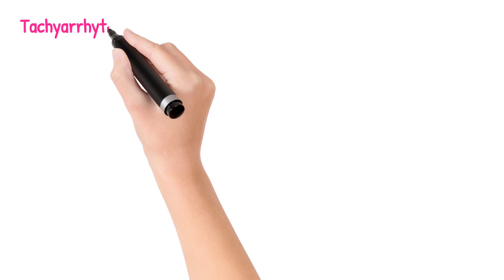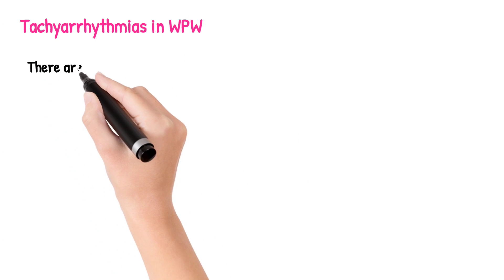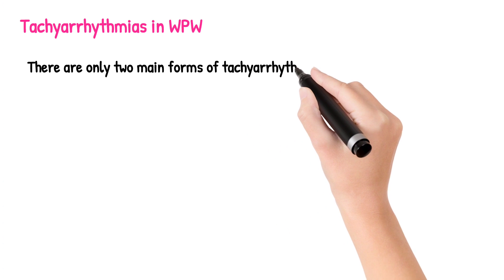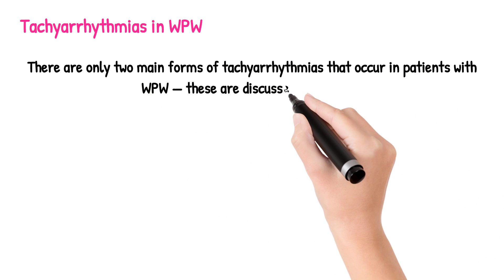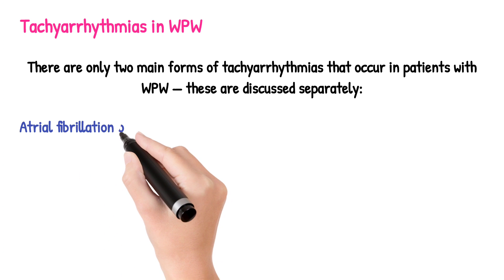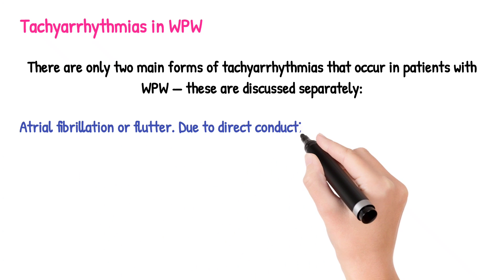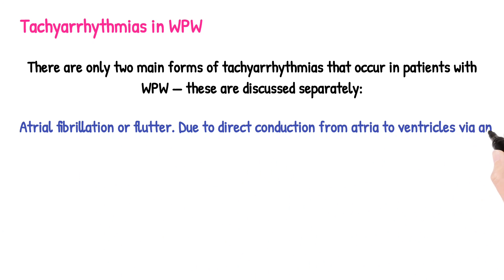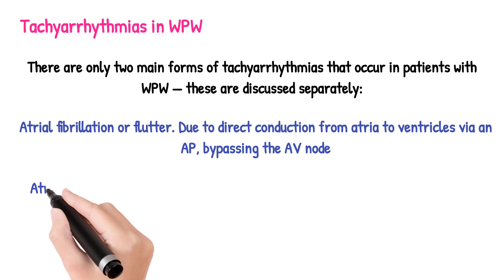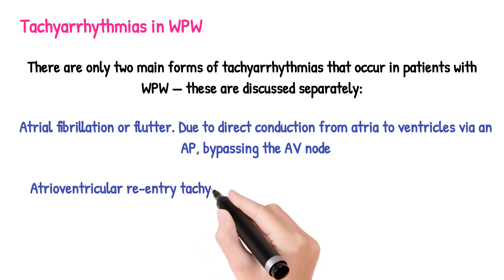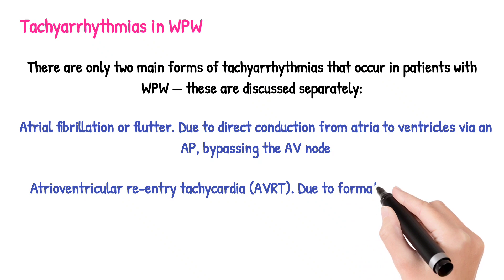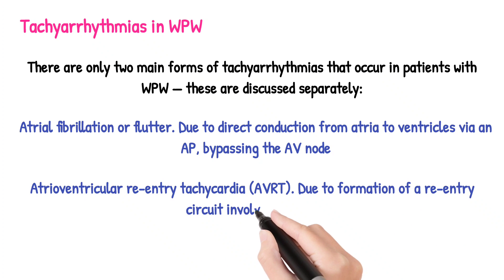Tachyarrhythmias in WPW. There are only two main forms of tachyarrhythmias that occur in patients with WPW. Atrial fibrillation or flutter due to direct conduction from atria to ventricles via an AP, bypassing the AV node. Atrioventricular reentry tachycardia (AVRT) due to formation of a reentry circuit involving the AP.